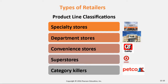We can also categorize retailers by product line classifications. Specialty stores — Ulta, for example — carry essentially one group of goods: beauty aids. They're not selling everything, just a certain group of things. Department stores like Belk are different — you can get makeup, men's clothes, women's clothes, shoes, and even a Cuisinart. Those are department stores.